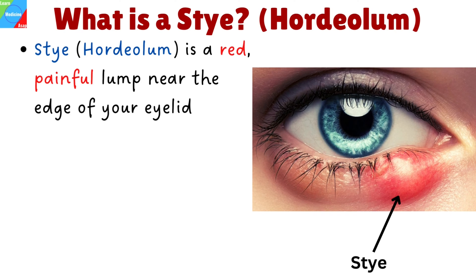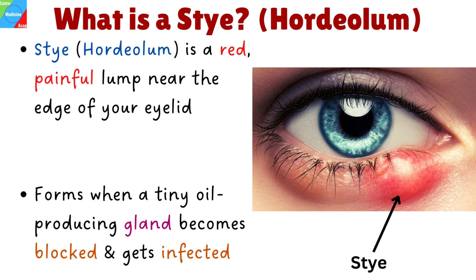A stye is a red, painful lump near the edge of your eyelid that may look like a boil or a pimple. It is formed when a tiny oil-producing gland in your eyelash follicle or eyelid skin becomes blocked and gets infected.